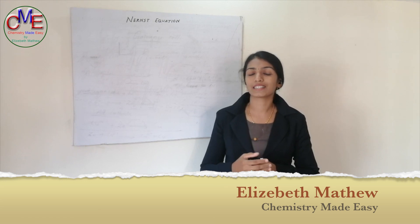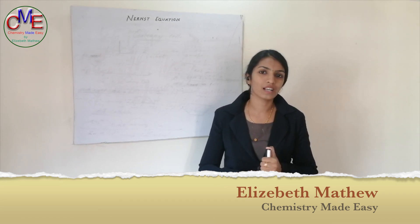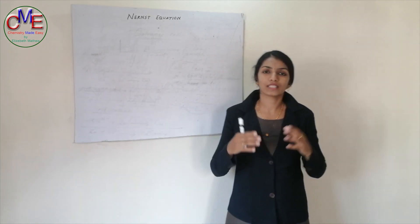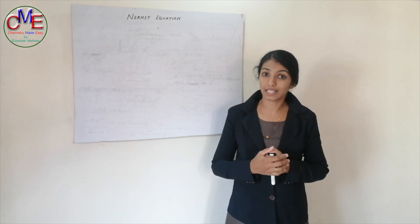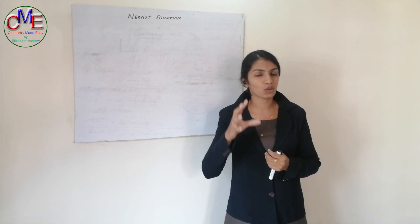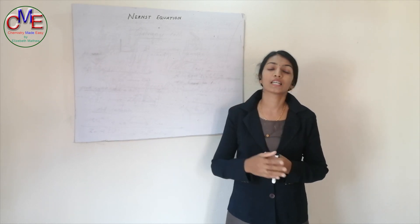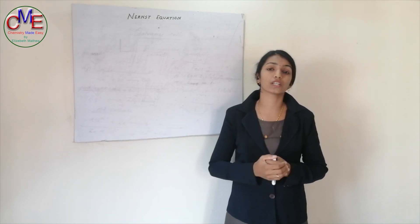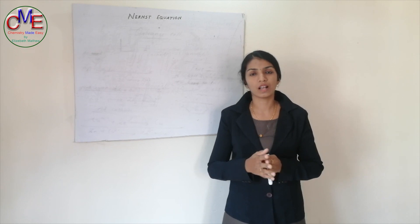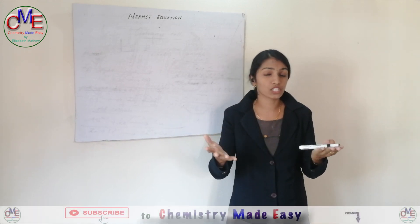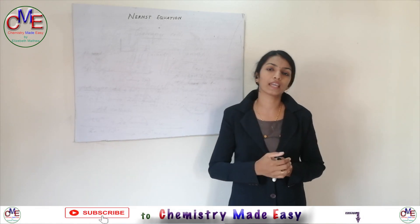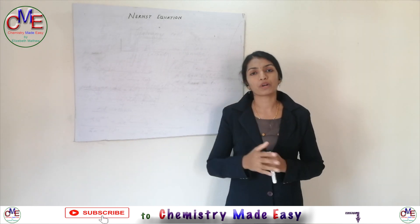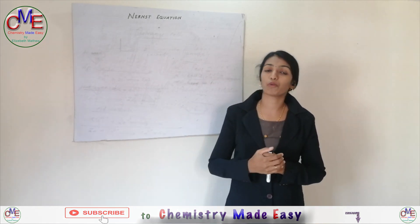In the last class we had been discussing measurement of electrode potential. Today our topic is the Nernst equation. We had also been discussing the electrochemical series. The electrochemical series is a table containing several electrode potentials, where elements are arranged in the order of their reduction potentials. From that electrochemical series we can obtain the values of electrode potentials of any electrode, but those values are standard electrode potential values.